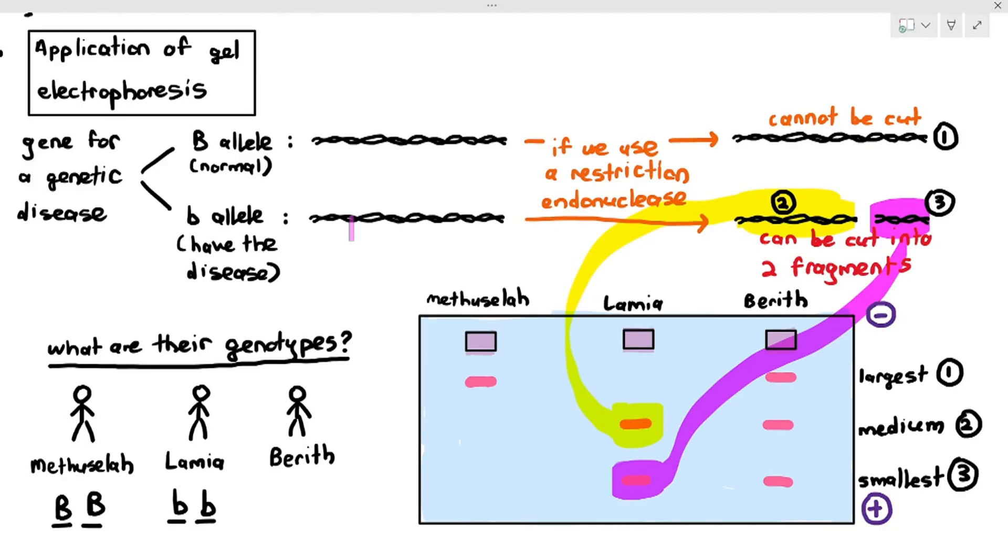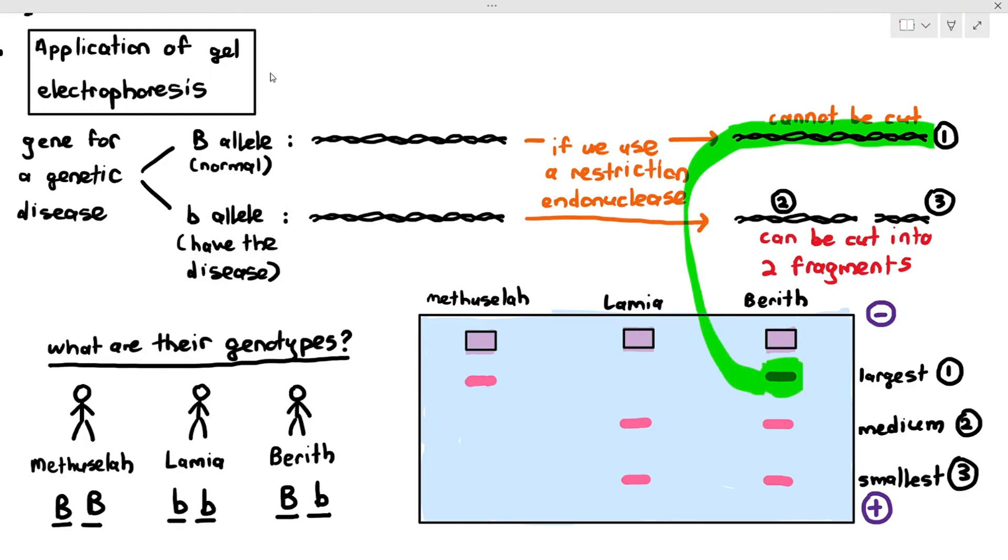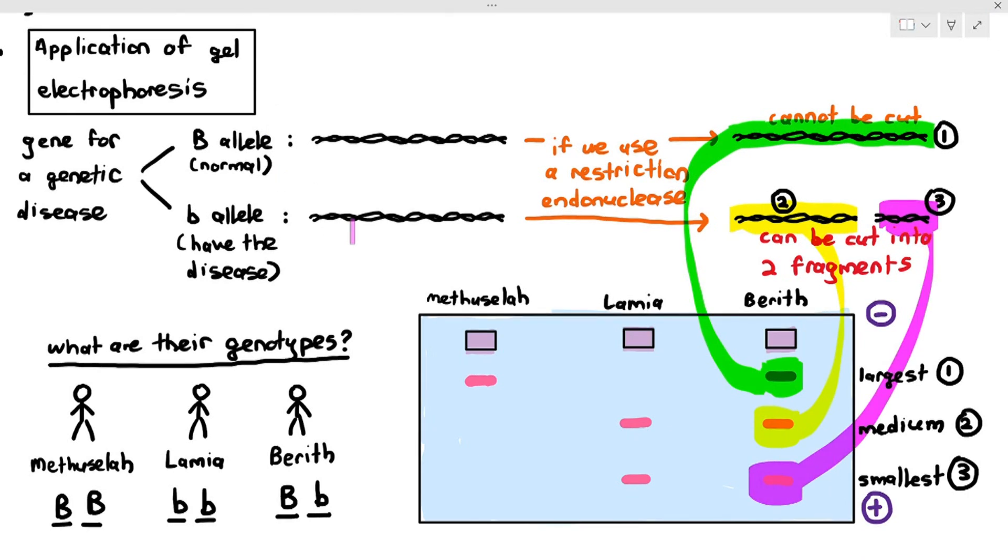What about Berith? I'm going to give you about 10 seconds to try to figure Berith out. If you guessed that Berith is large B, small B, you are right, because they had the large B allele, which is separated over there, and they have the small B alleles, which are separated there and also there. That is how we can use gel electrophoresis to detect the presence of specific diseases, or even predict the genotype of a person.